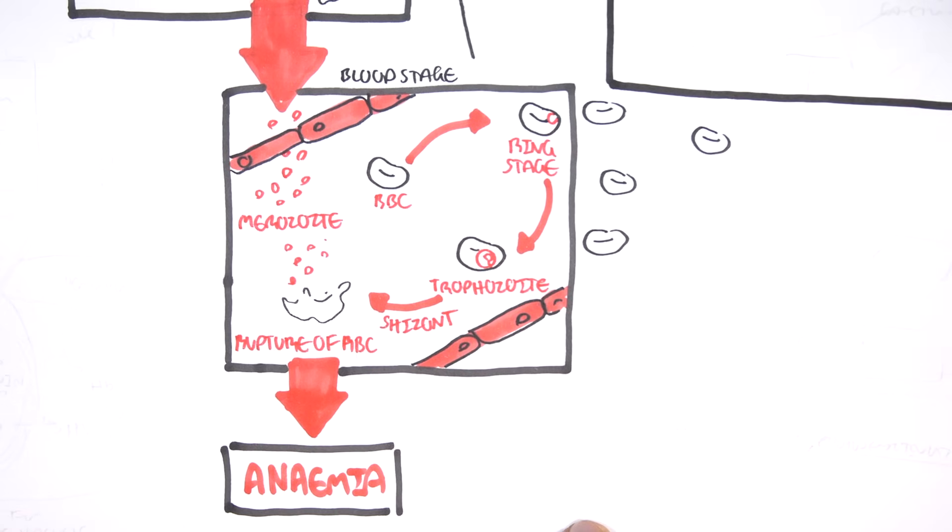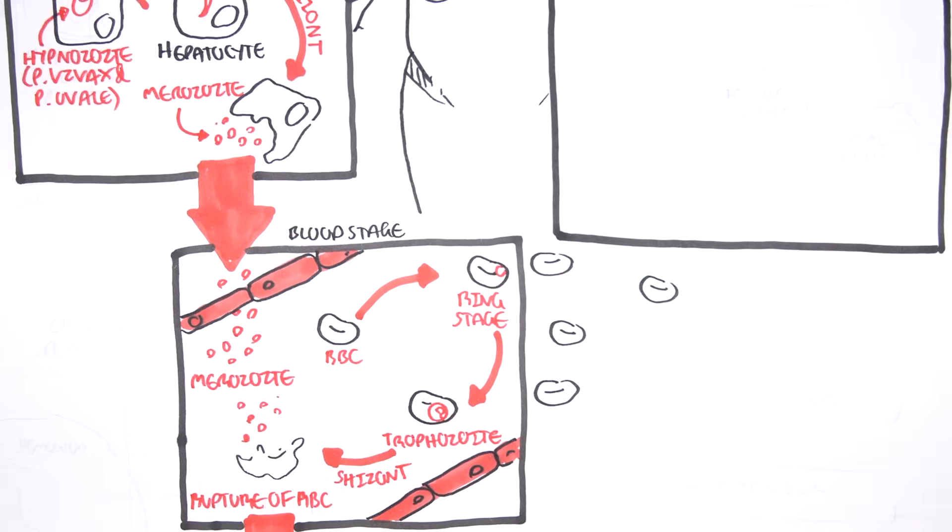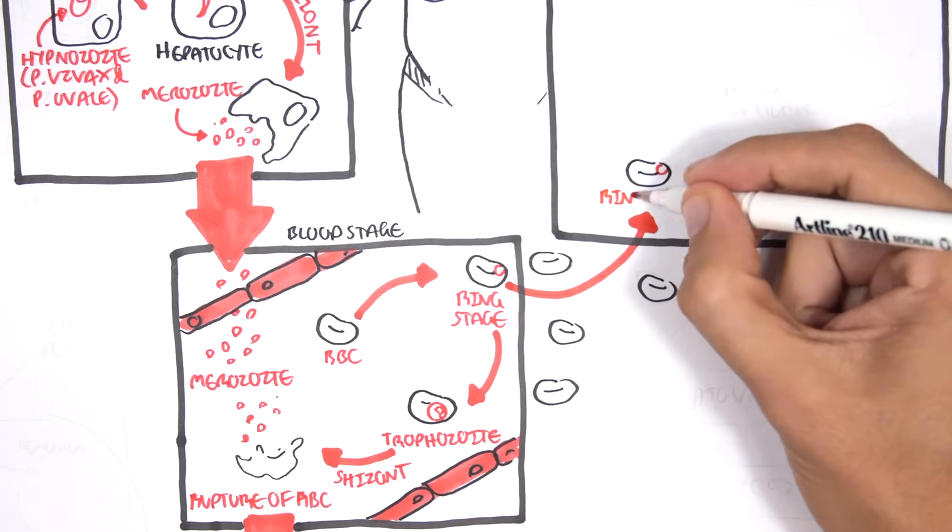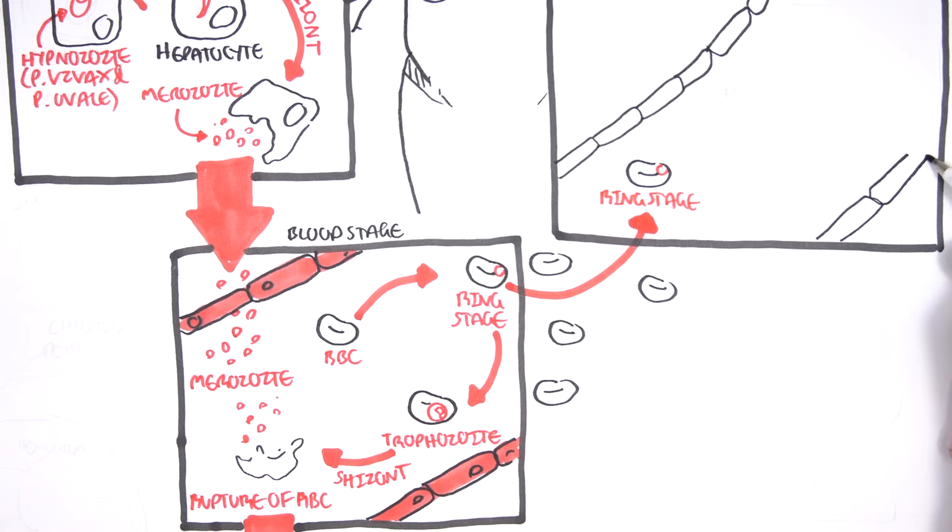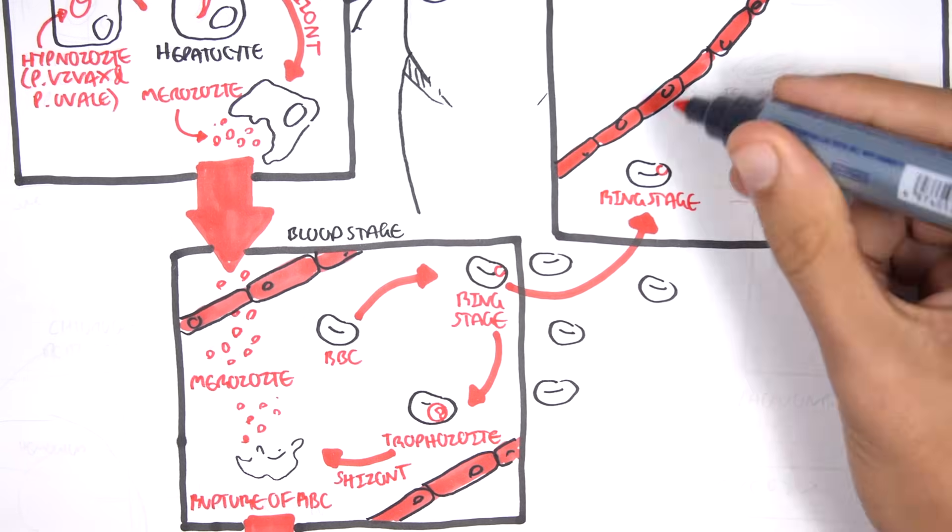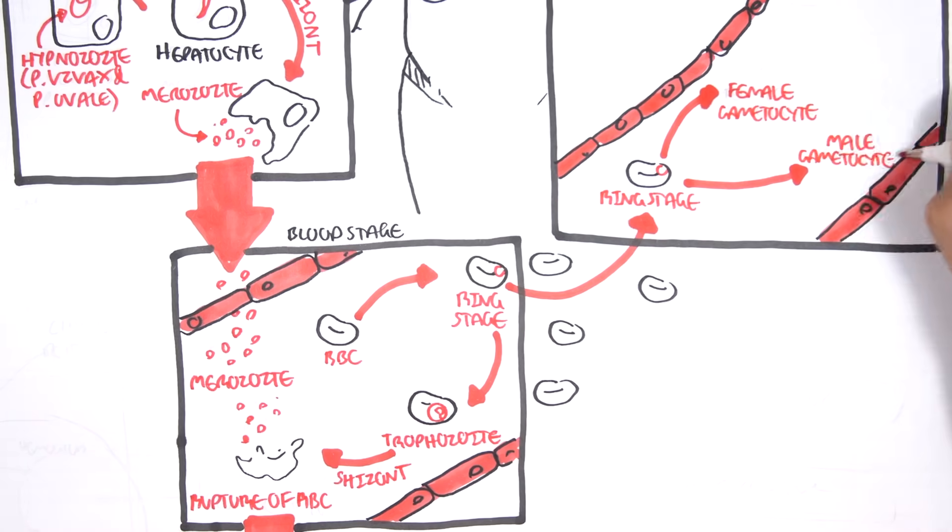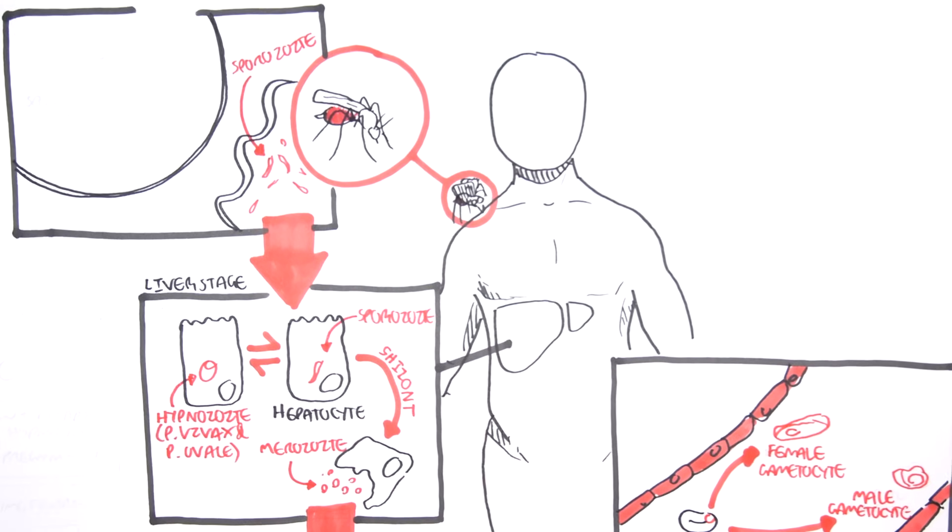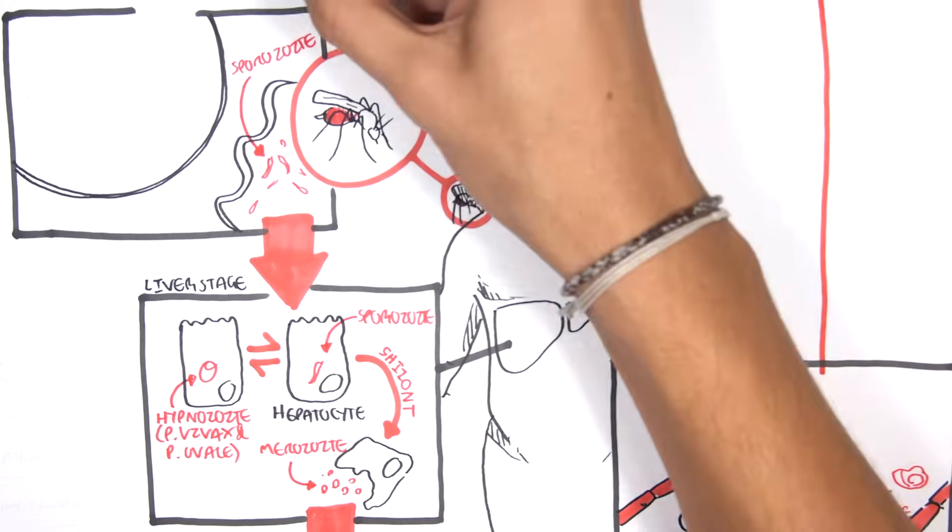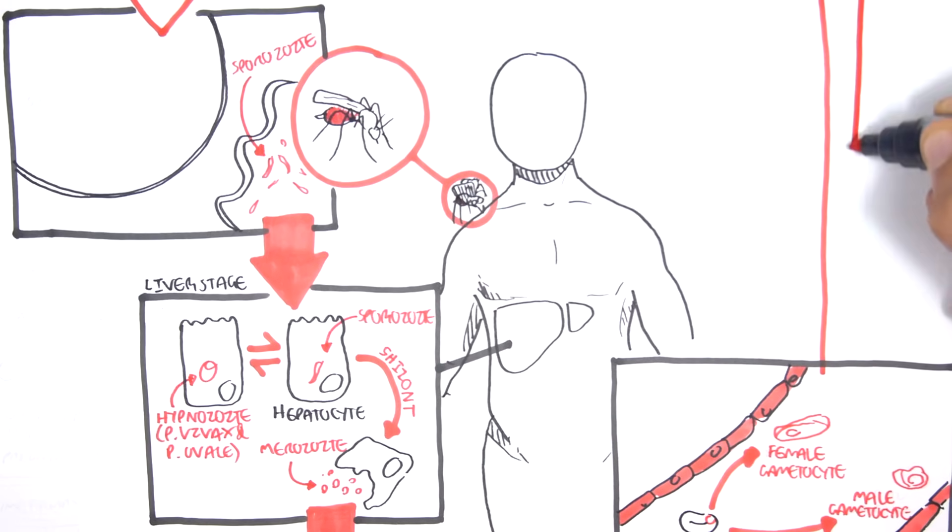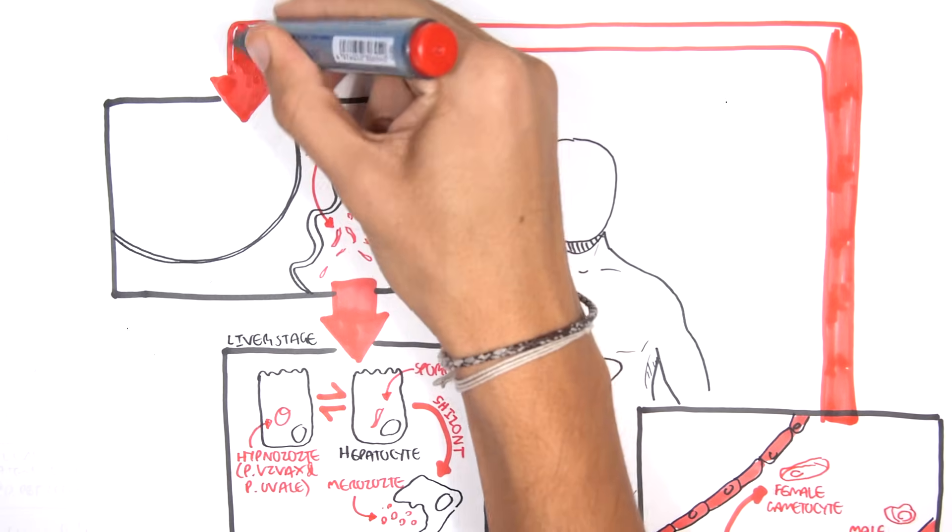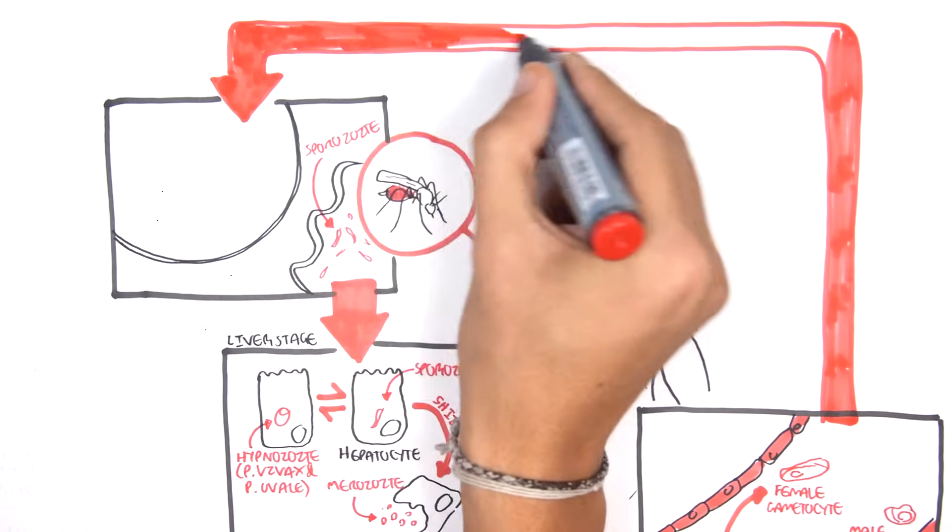Going back to the ring stage of the parasite's life cycle, which is in the red blood cells, the parasite can also enter a sexual cycle where it can become a female or male gametocyte. When a new, uninfected Anopheles mosquito then comes along for feeding, it can take in these gametocytes. The gametocytes will enter the mosquito's stomach. The Anopheles mosquito is now infected with the parasite.